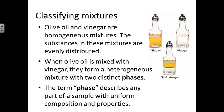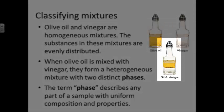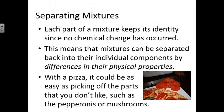Those layers are called phases. The term phase describes any part of a sample that has uniform composition and properties. Since olive oil and vinegar will not stay mixed together, they separate into two different layers — we can say that oil and vinegar exist in two distinct phases. Each part of a mixture keeps its identity, and no chemical change has occurred.